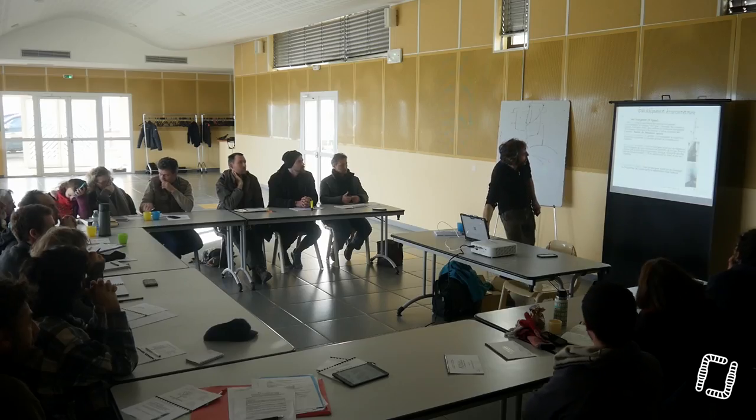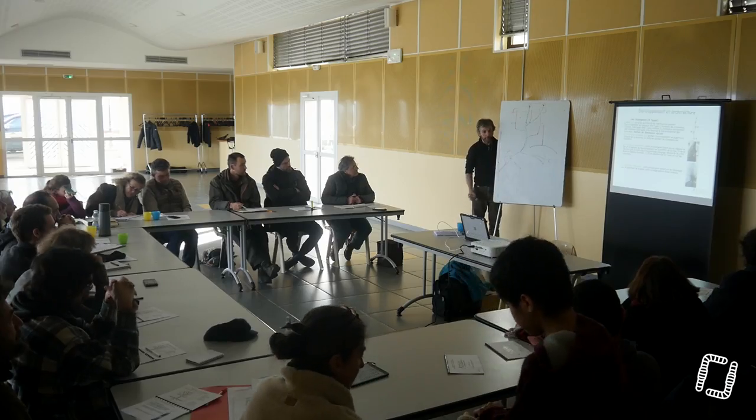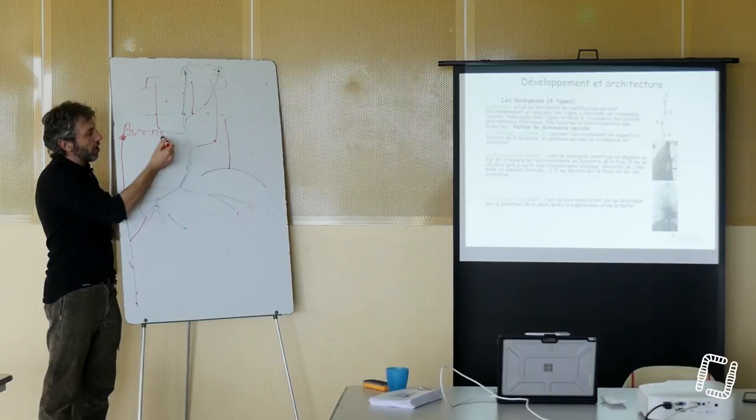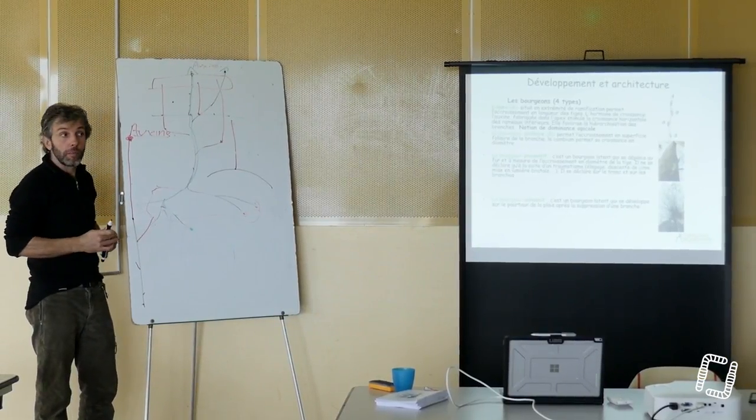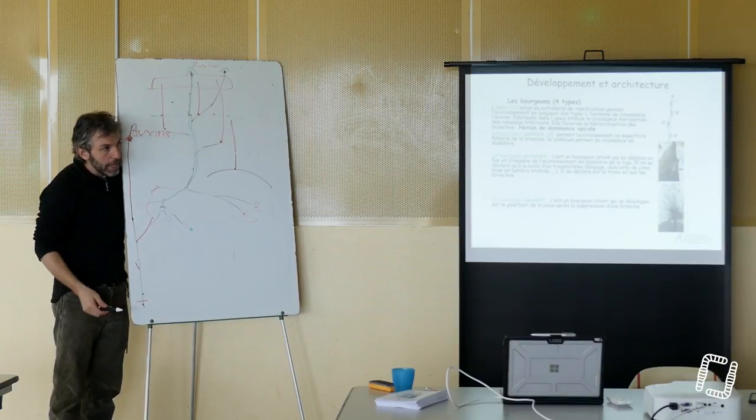On pourrait déterminer les types de bourgeons. On a le bourgeon l'apex, qui est au sommet, qui est là pour développer en longueur la branche. On a ensuite les bourgeons axillaires, qui permettent d'abord de fabriquer du feuillage et puis éventuellement de faire des ramifications secondaires. Et puis on a le bourgeon proventif. C'est un bourgeon qui est fabriqué. Ce bourgeon proventif, il ne démarre pas. Il est muselé par l'auxine. L'auxine musèle ce bourgeon, l'empêche de se développer. Il se retrouve à être inhibé dans sa croissance.